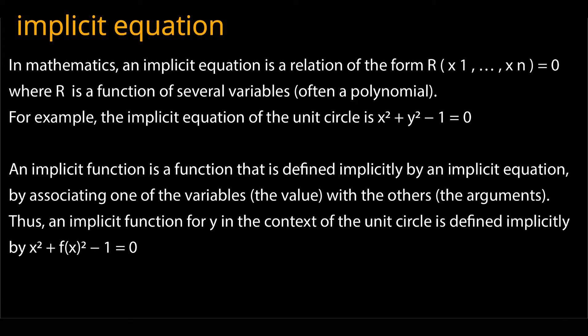Thus, an implicit function for y in the context of the unit circle is defined implicitly by x² + f(x)² − 1 = 0. Now let's go straight to the board and look at this.